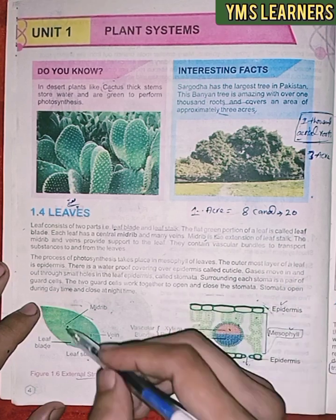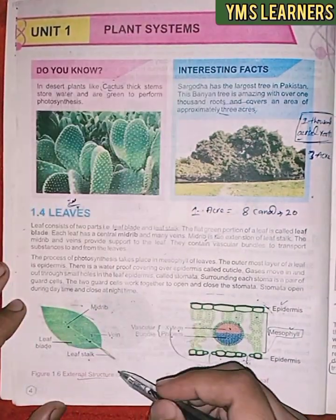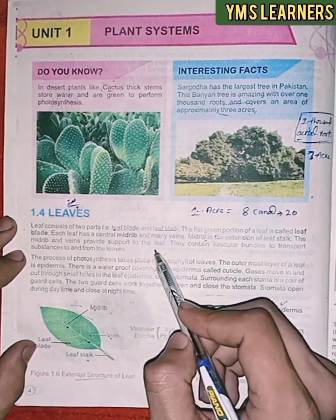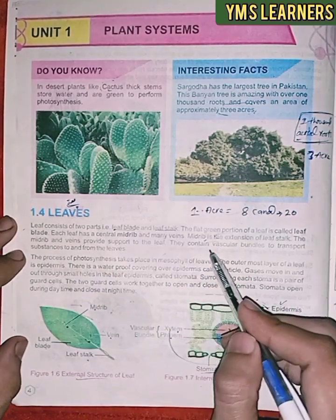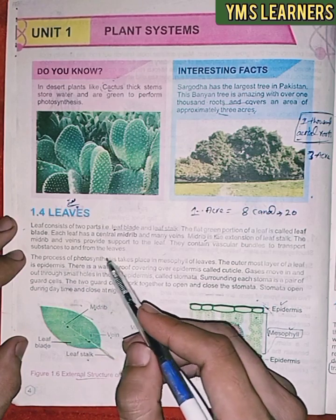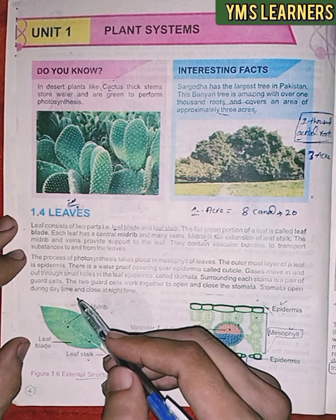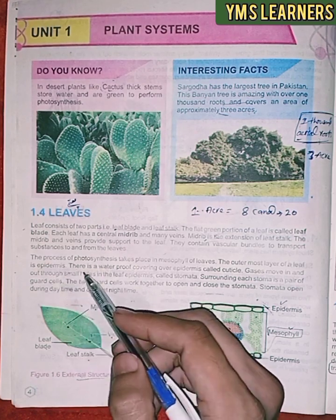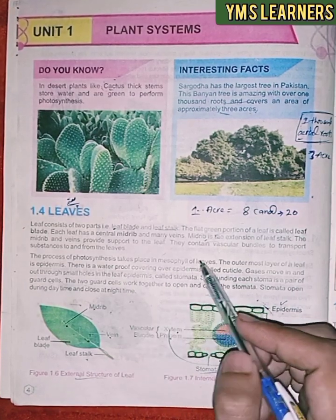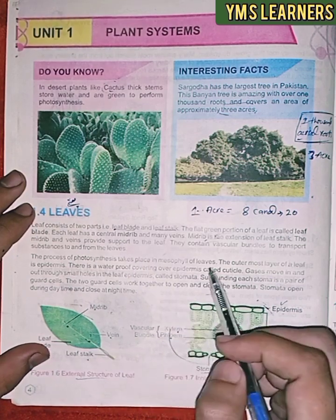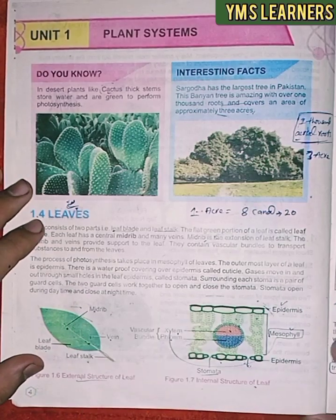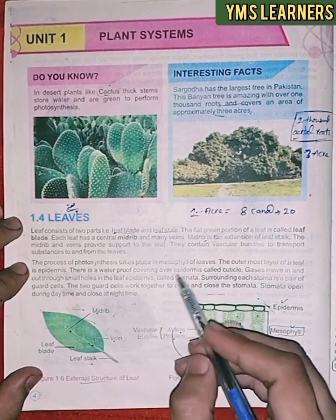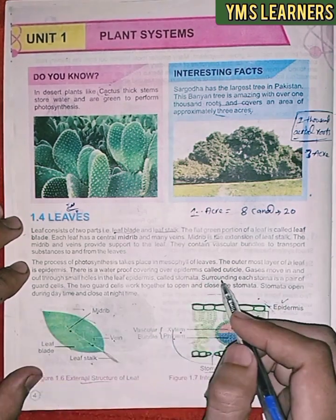The midrib is the extension of the leaf stalk. The midrib and veins provide support to the leaf. They contain vascular bundles to transport substances to and from the leaves. The process of photosynthesis takes place in the mesophyll of leaves. The outer layer of the leaf is the epidermis, and there is a waterproof covering called the cuticle.